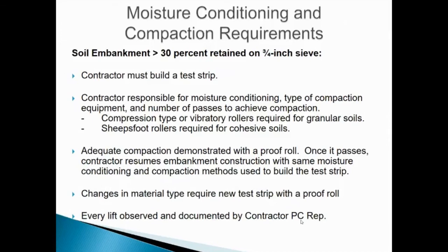If there are any changes in material type, the contractor must build a new test strip and demonstrate compaction methods with another proof roll. Every lift must be observed and documented by the contractor's process control (PC) representative, who must document that each lift was placed following the compaction methods from the test strip and that no pumping or deflection was observed.